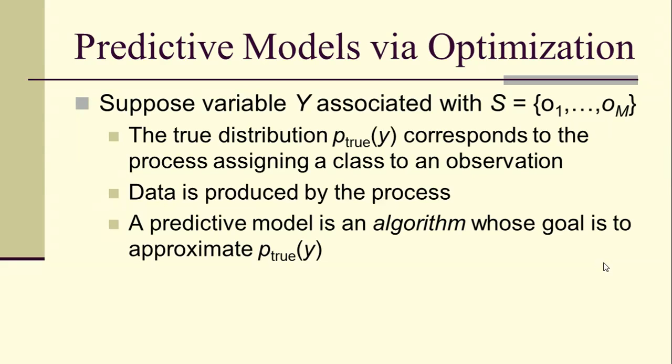A predictive model is an algorithm whose goal is to approximate the true distribution that's unknown because it's in the process that we're studying. And usually, or very often, we'll set up scenarios where ptrue of y is a maximum or a minimum of some objective, and the predictive model is the algorithm that takes us toward that max or min.